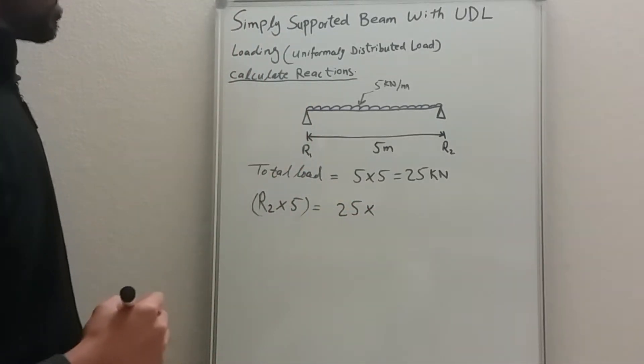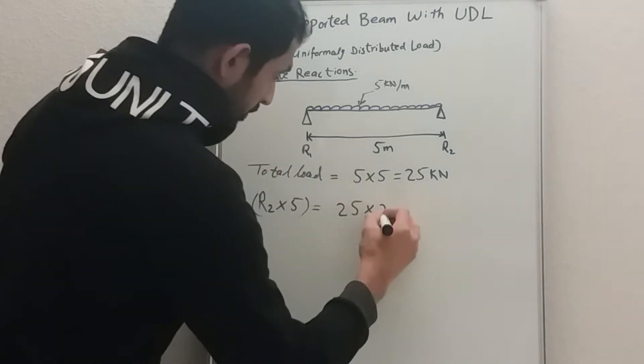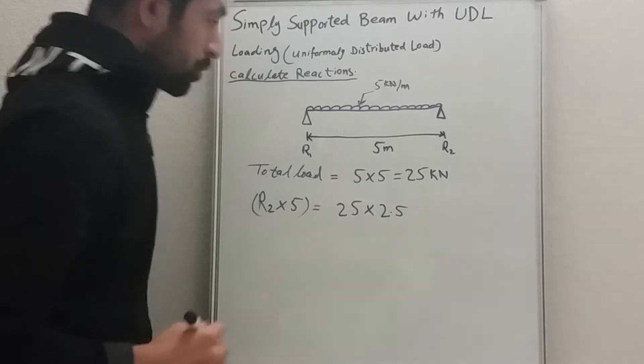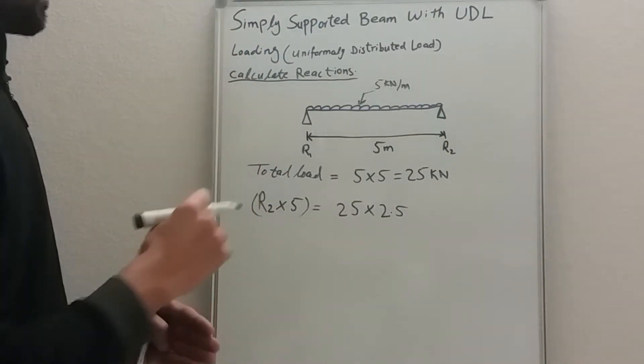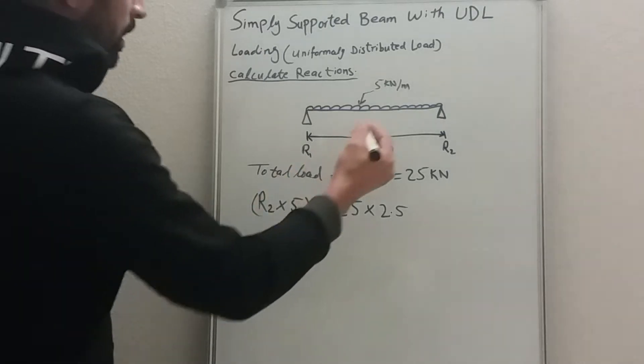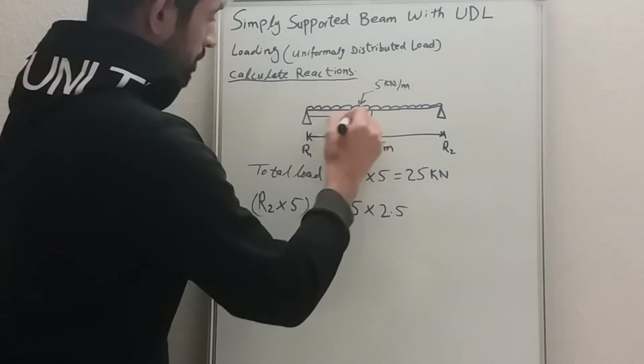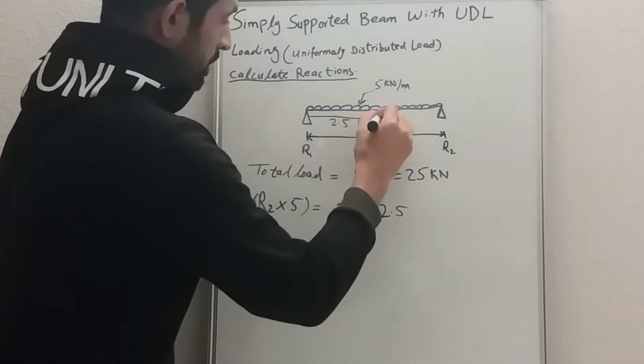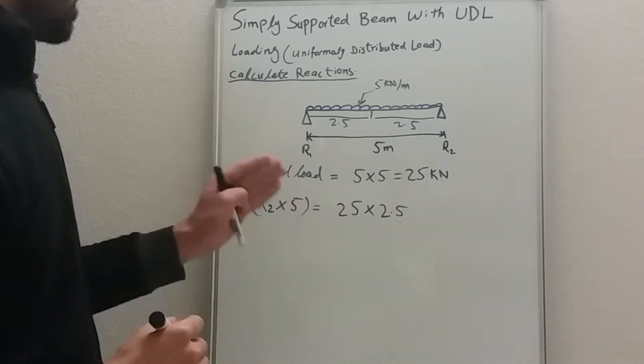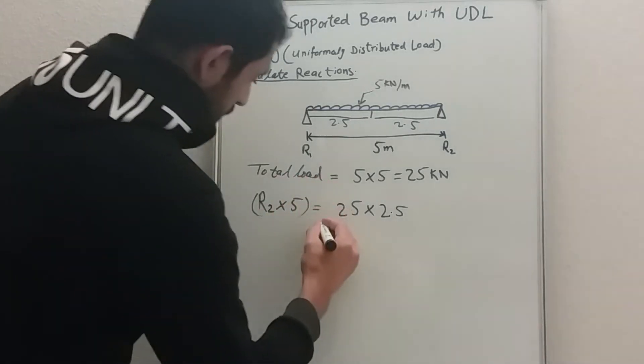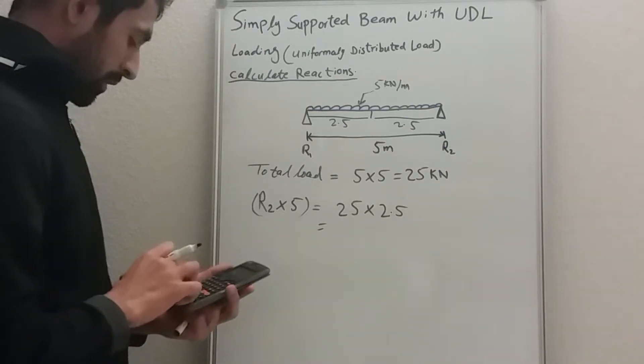Now we need to determine the arm. The arm is going to be 2.5. There is a simple rule: UDL always acts at half length. So half length of the UDL is going to be 2.5 from here to there. So 2.5 is here and 2.5 is there, because UDL always acts at half of its length.